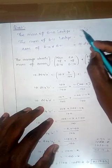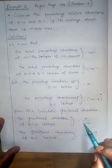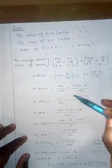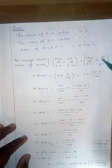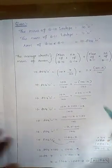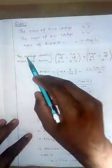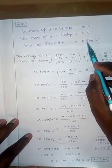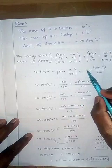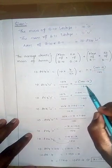Substituting the values: mass of B-10 is 10, and fractional abundance of B-10 is x/100. Mass of B-11 is 11, and fractional abundance of B-11 is (100 minus x)/100. So the equation becomes: 10 × (x/100) + 11 × (100 minus x)/100 = 10.804. That gives us 10x/100 + 11(100 minus x)/100 = 10.804. Since the denominator is 100 in both terms, we can combine them.